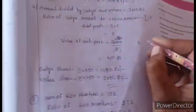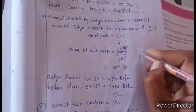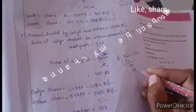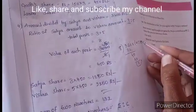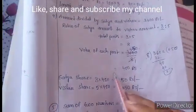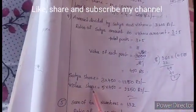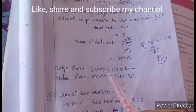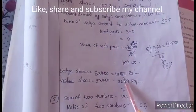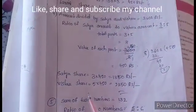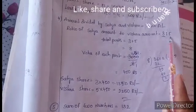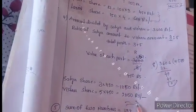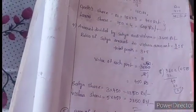Simplifying 3,600 divided by 8: 1 part equals 450 rupees. Satyayani's share: ratio 3, so 3 into 450 equals 1,350 rupees. Vishnu's share: ratio 5, so 5 into 450 equals 2,250 rupees. Adding 1,350 plus 2,250 gives 3,600 rupees, which confirms the answer.